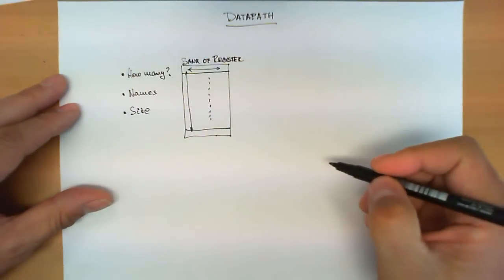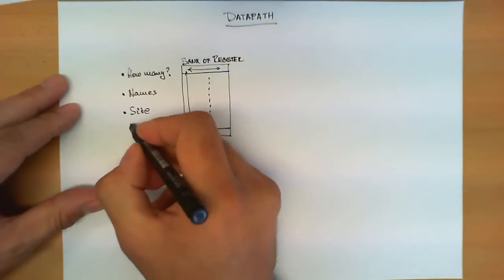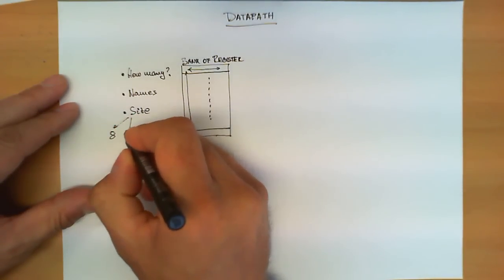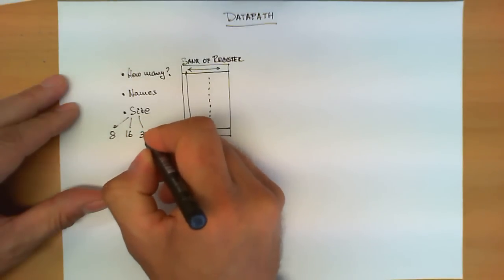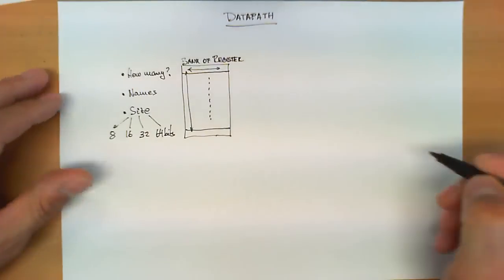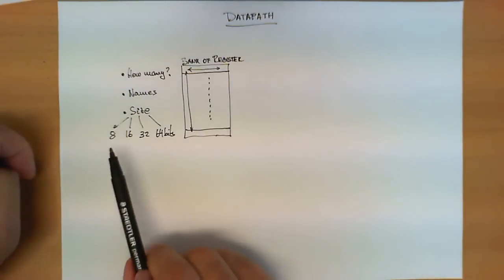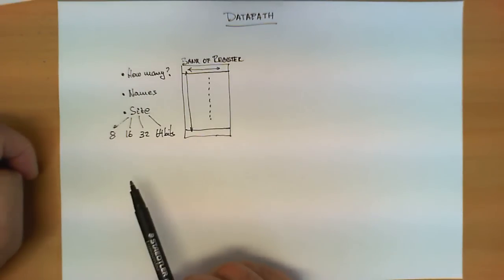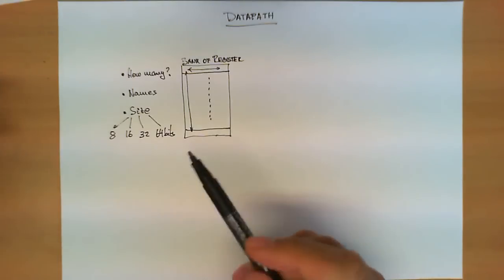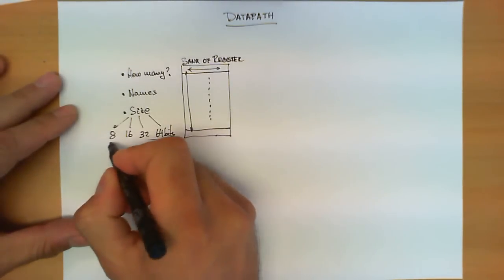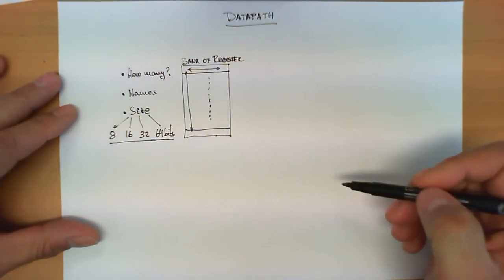The number of registers would be this dimension. Regarding size, the typical values are either 8, 16, 32, or 64 bits. From one microprocessor to another, both the size and the number — and also the names of these registers — change.